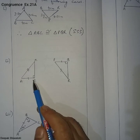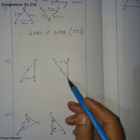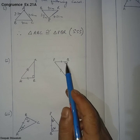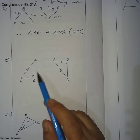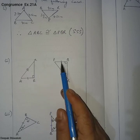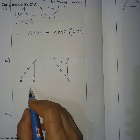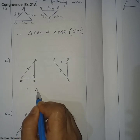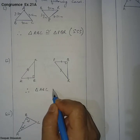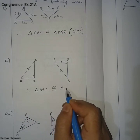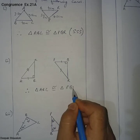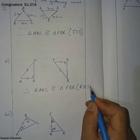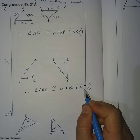These two are right angle triangles where both angles are 90 degrees, the hypotenuses are equal, and the sides are equal. Therefore these two triangles are congruent by the RHS rule. Triangle ABC is congruent to triangle PQR by RHS (Right angle Hypotenuse Side).